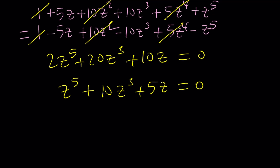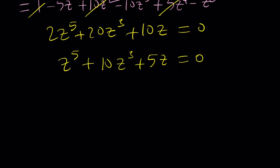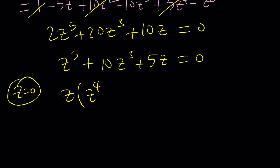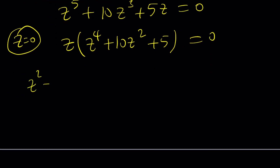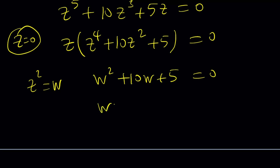This is still a quintic, but it's a very nice one because we can factor out z. So z equals 0 is a solution — and that's the only real solution. Factoring out z leaves a biquadratic. Setting z² equal to w, we can write the equation as w² + 10w + 5 = 0. Solve with the quadratic formula and then back-substitute.